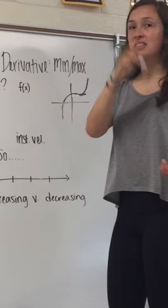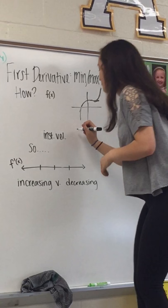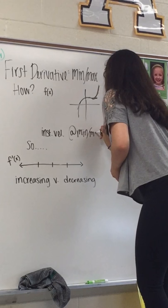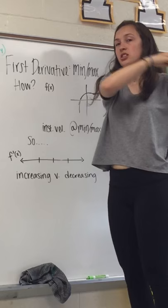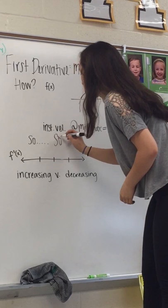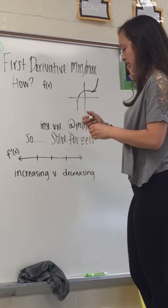So, your slope is at 0 because you're peaking. So, your instantaneous velocity at minimums and maximums is equal to 0 because it's right at the top and that's the only point it touches would be at a 0 slope. So, all you have to do is solve for 0.